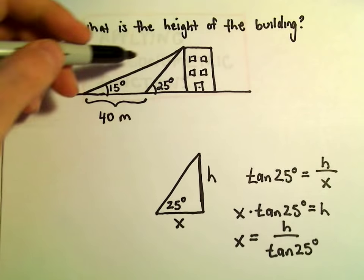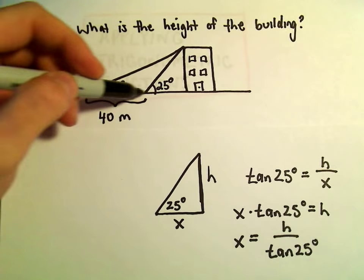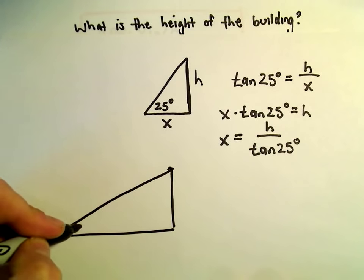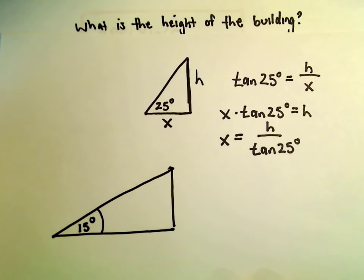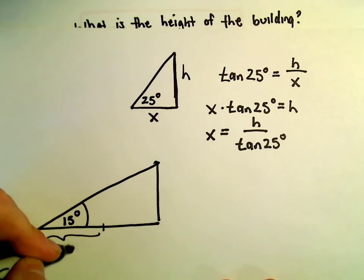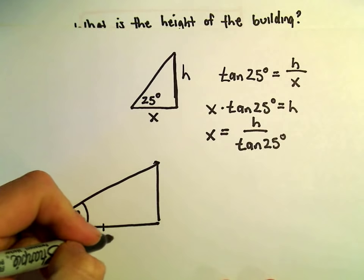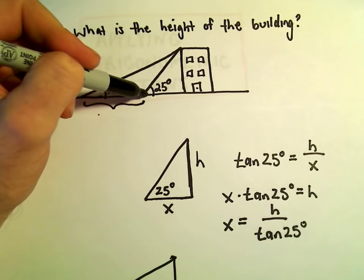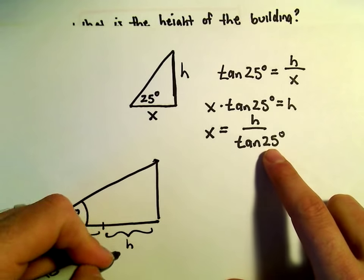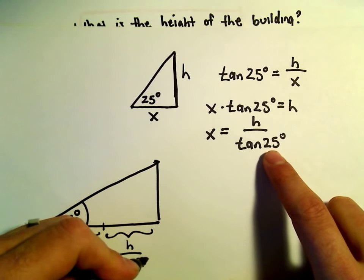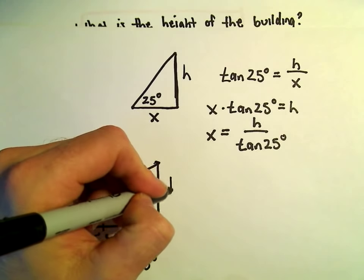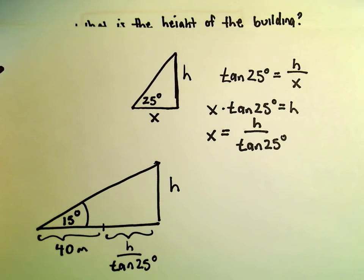Okay, so what I'm going to do now is I'm going to think about this larger triangle. So we have this bigger triangle. Okay, we knew that that was 15 degrees. We knew that part of the distance was 40 meters. The rest of the distance we've just solved. That's going to come from the other triangle. And we've just figured that out to be h over tangent of 25 degrees. And again, we have the big height here still on the right side.